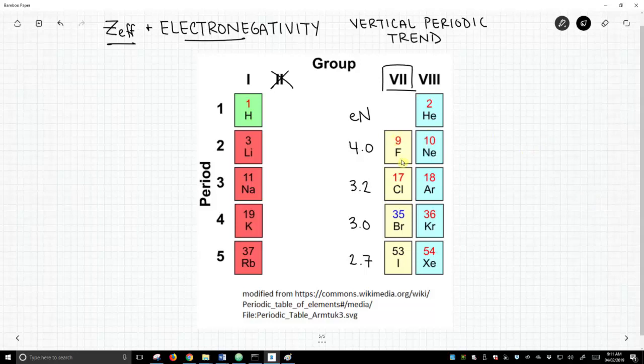So electronegativity of fluorine, and that includes all of our halogens. The electronegativity of fluorine is 4.0, chlorine is 3.2, bromine is 3.0, and iodine is 2.7.